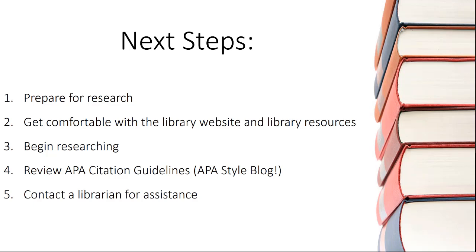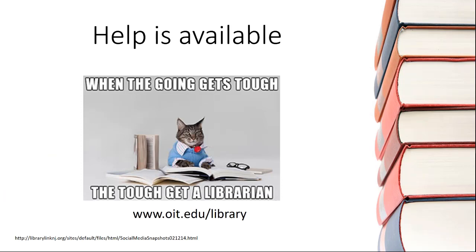You'll also want to review current citation guidelines. If you're using APA Style for your annotated bibliography, check out the APA Style blog — just search 'APA Style blog' online for instructions on how to handle unusual cases. Finally, if you have questions about research, citation, or your annotated bibliography assignment in general, contact a librarian for assistance. Visit www.oit.edu/library for more information.